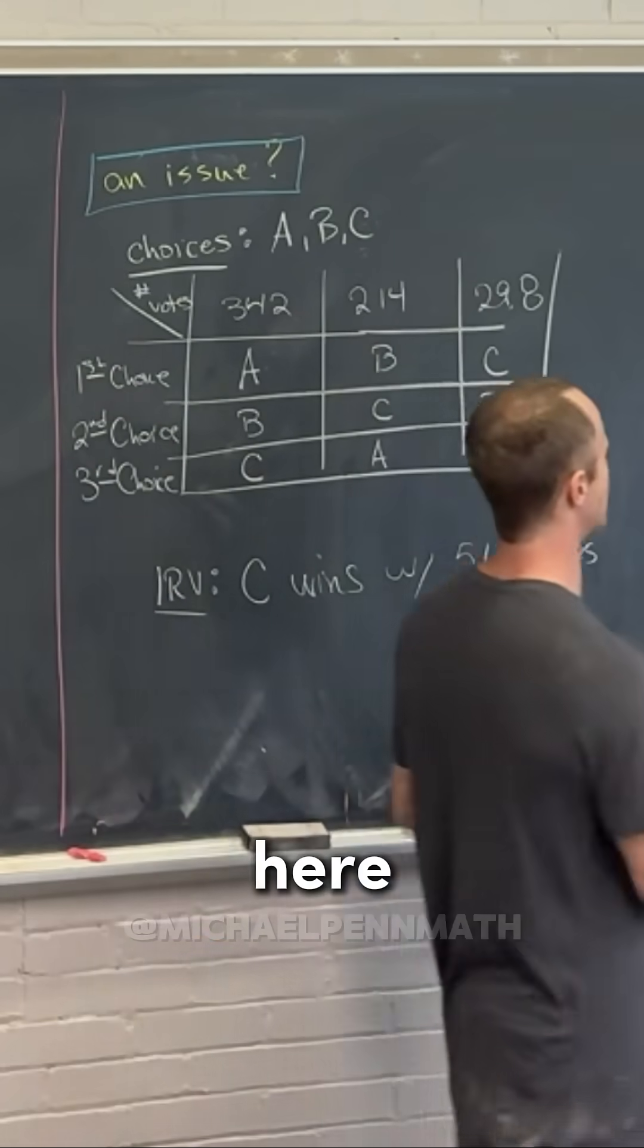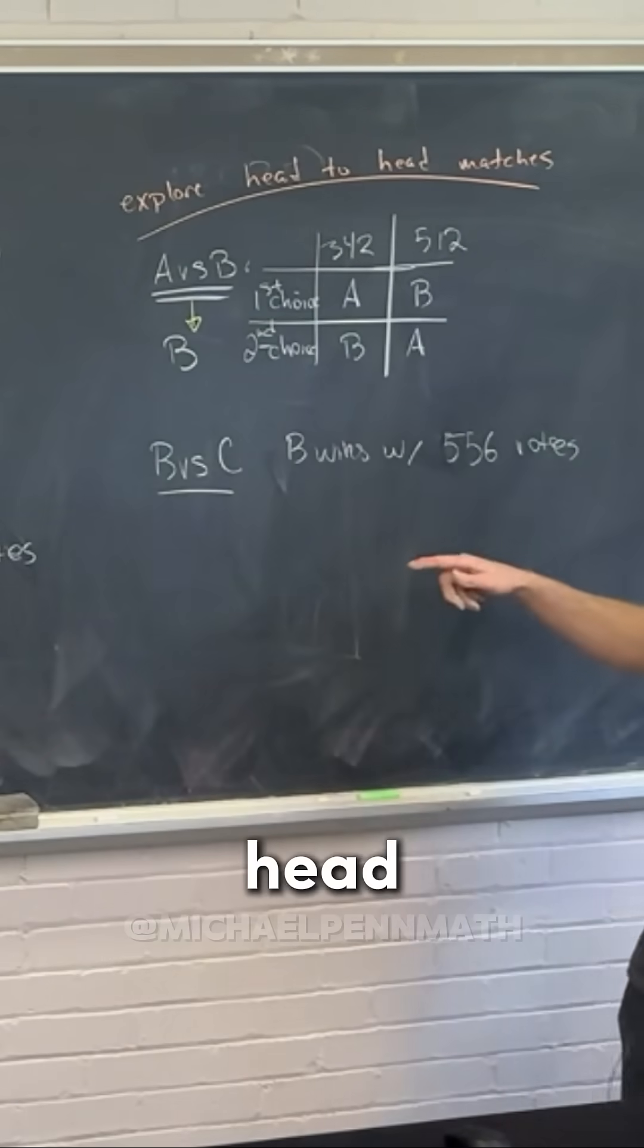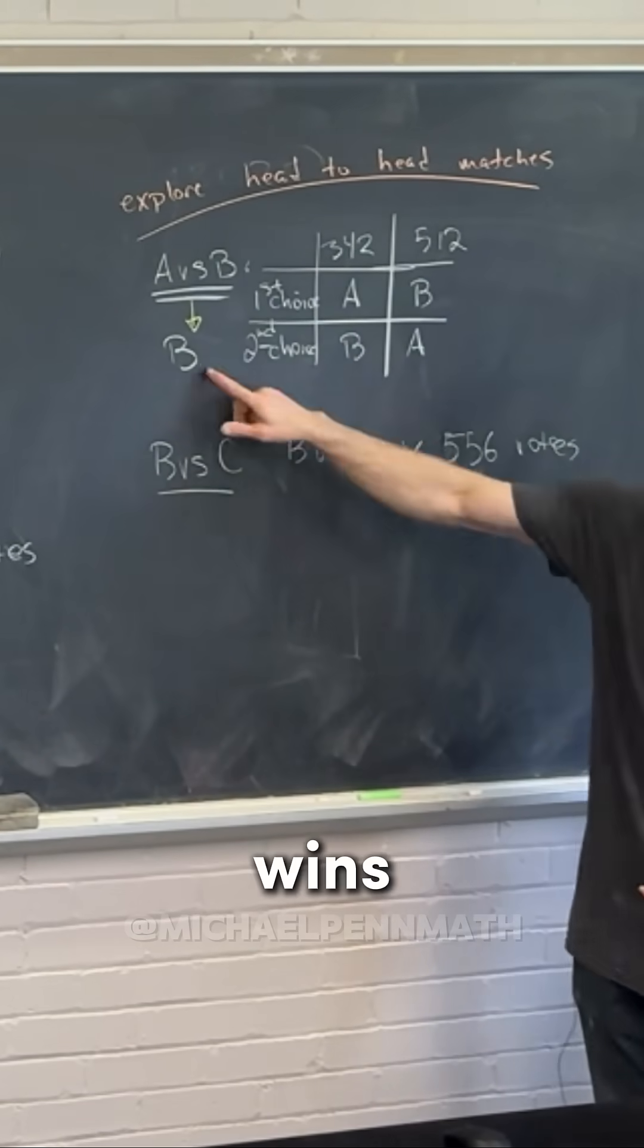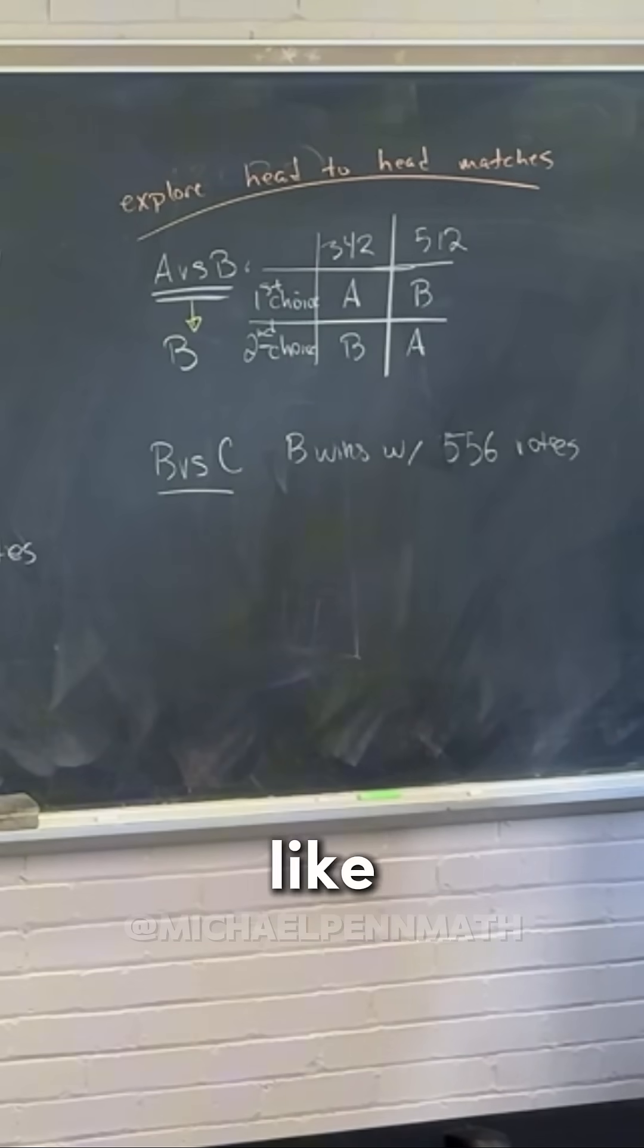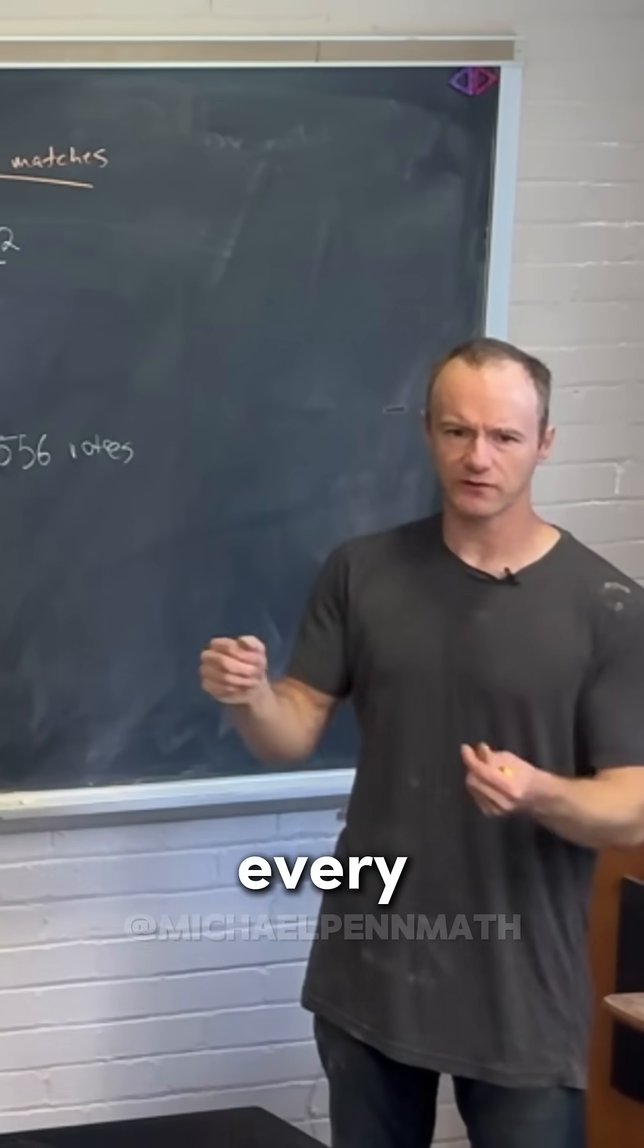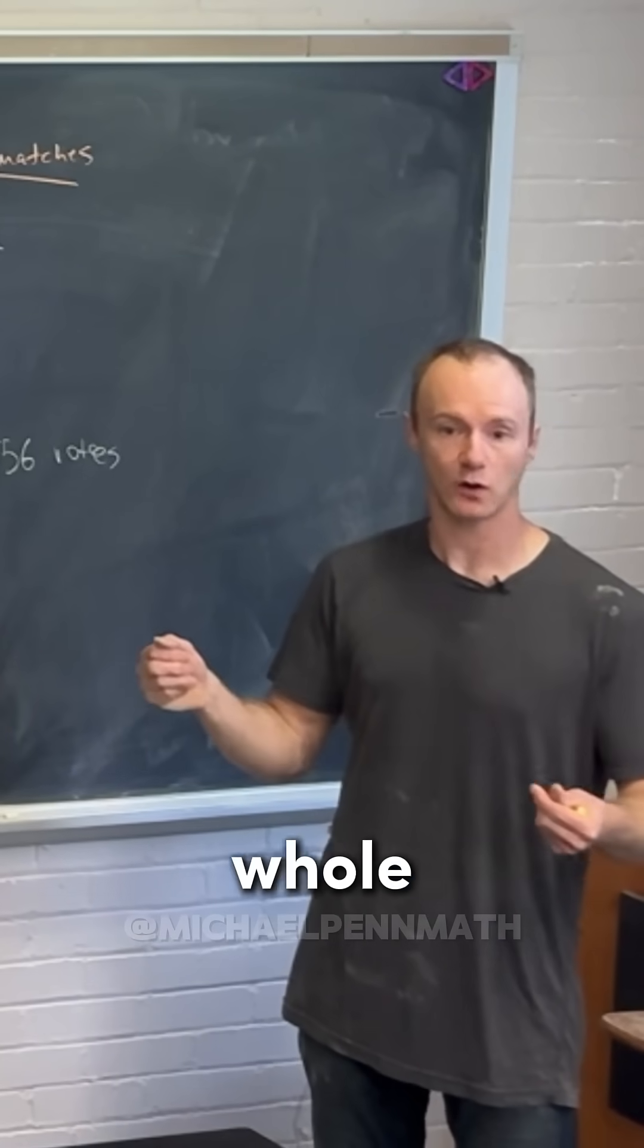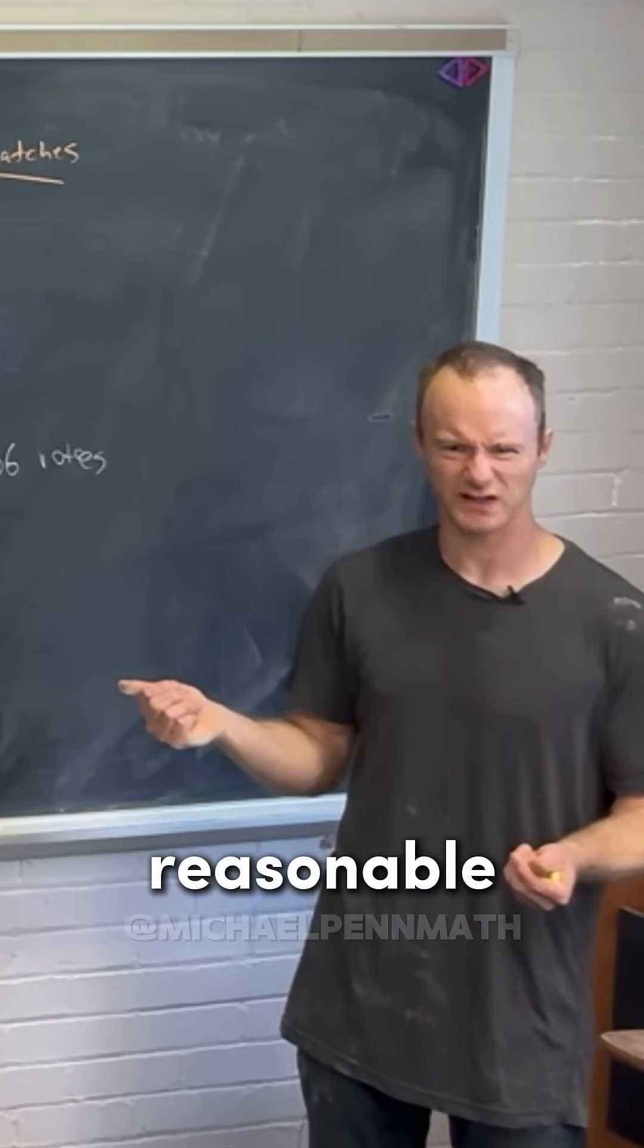So let's look at this over here. If we look at head-to-head matches, B wins against any candidate. So it seems like if B wins every head-to-head match, it should win the whole election. That seems to be a reasonable expectation.